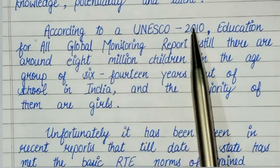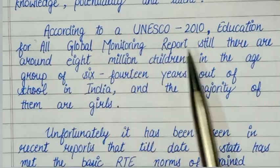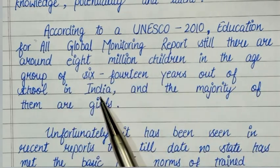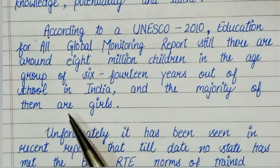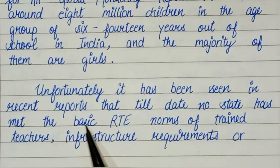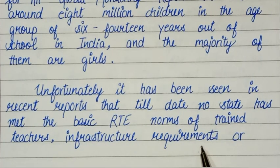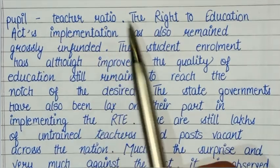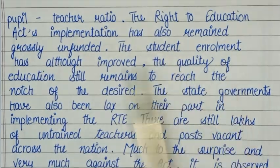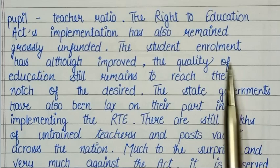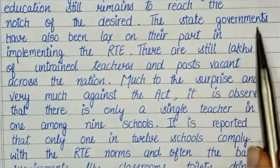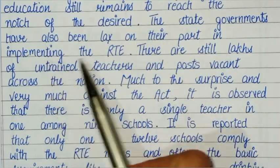According to a UNESCO 2010 Education for All Global Monitoring report, there are still around 8 million children in the age group of 6 to 14 years out of school in India, and the majority of them are girls. Recent reports show that no state has met the basic RTE norms of trained teachers, infrastructure requirements, or pupil-teacher ratio. The Right to Education Act's implementation has also remained grossly underfunded, and while student enrollment has improved, the quality of education still remains below the desired standard.